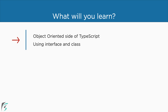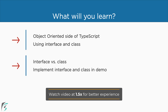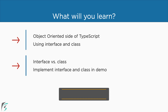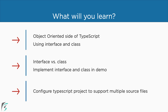We will see the object oriented side of TypeScript. Creating custom types in TypeScript is mostly about using interfaces and classes. We will first check out the difference between the two. This will help us to choose whether we need an interface or we need a class. When we create the classes, we will have multiple TypeScript source files, and we will also see how to configure a TypeScript project to support multiple TypeScript files.